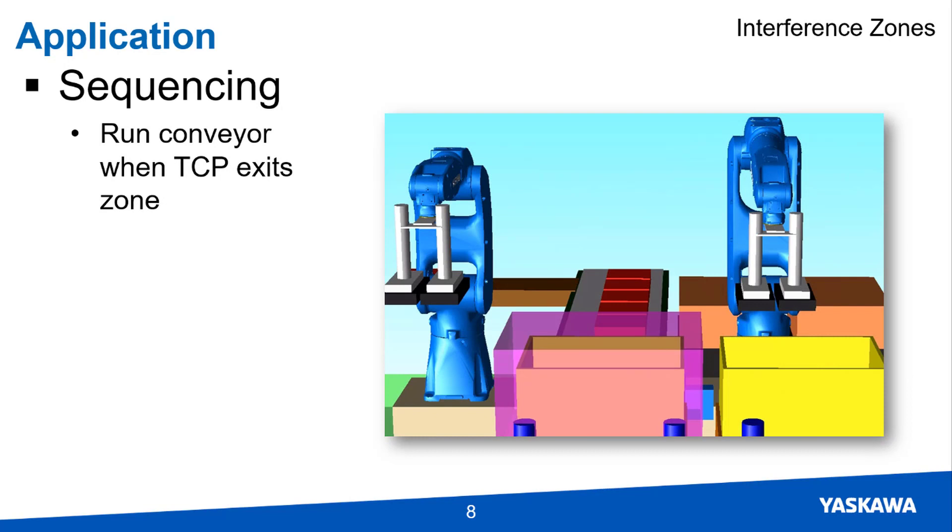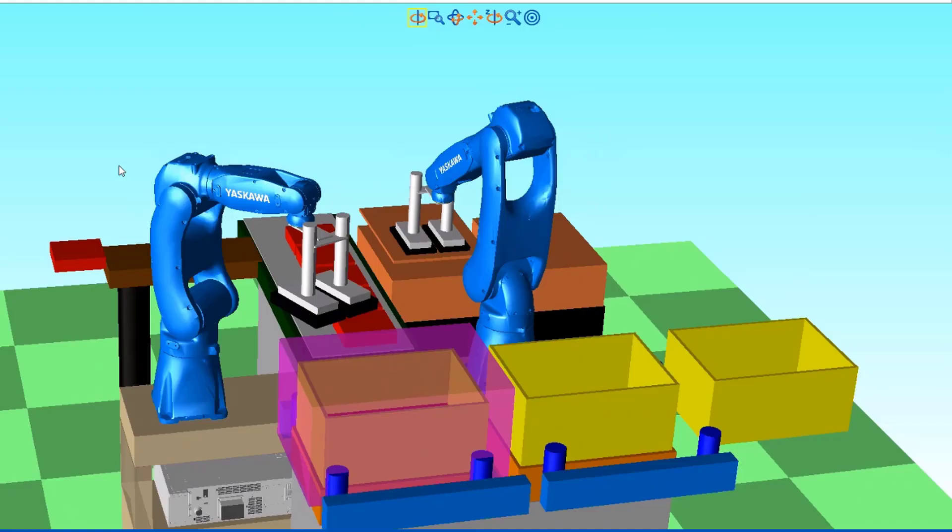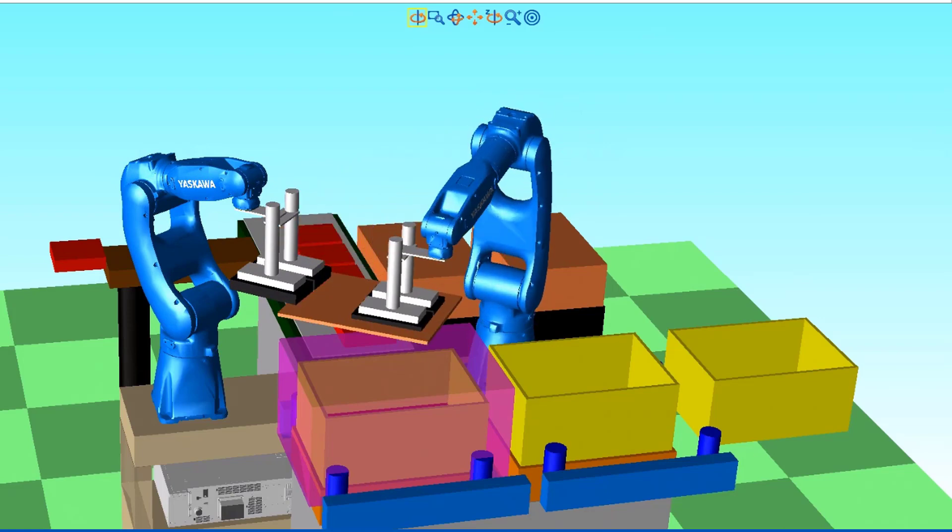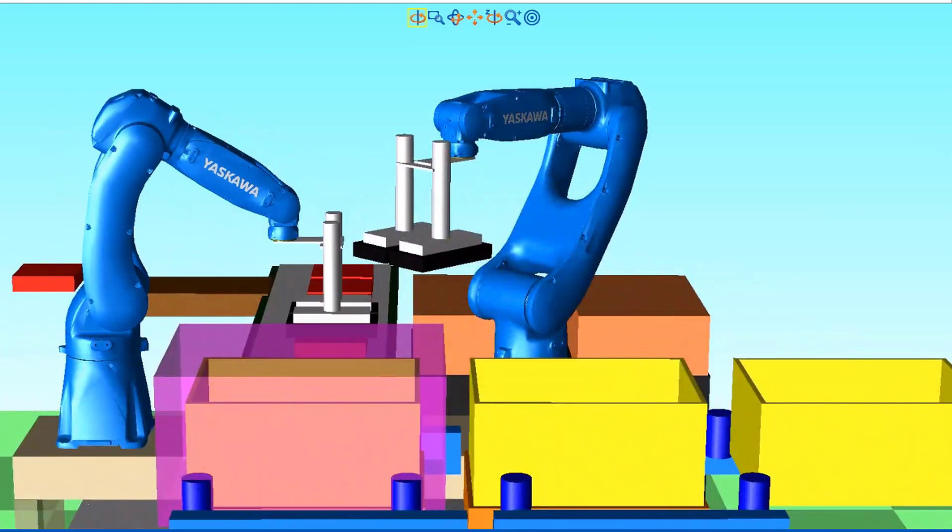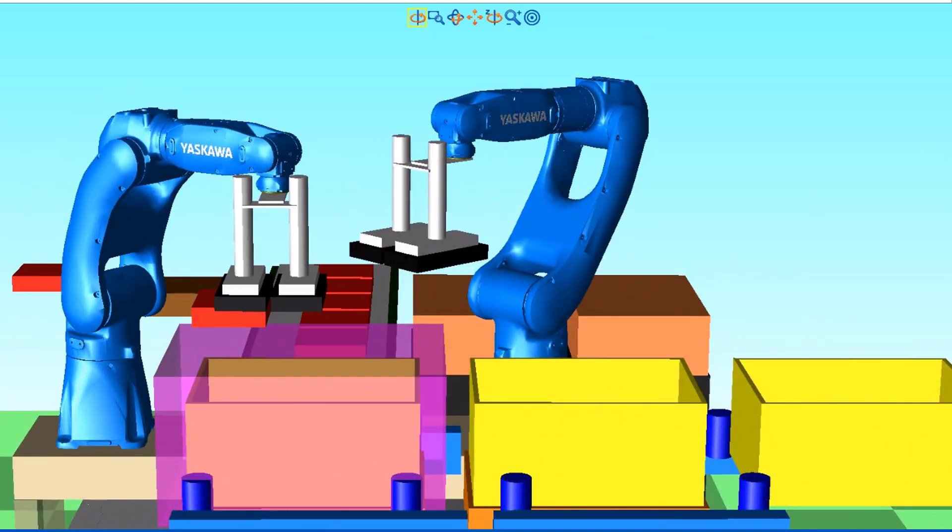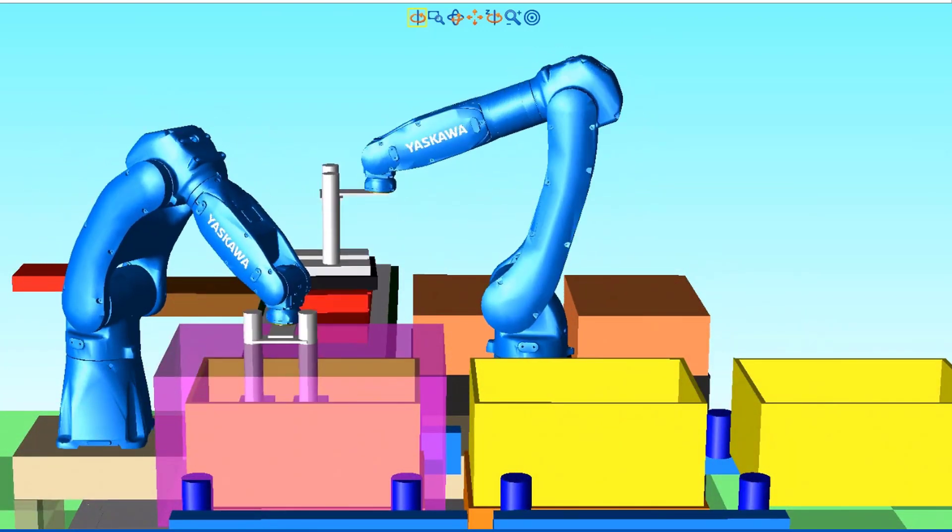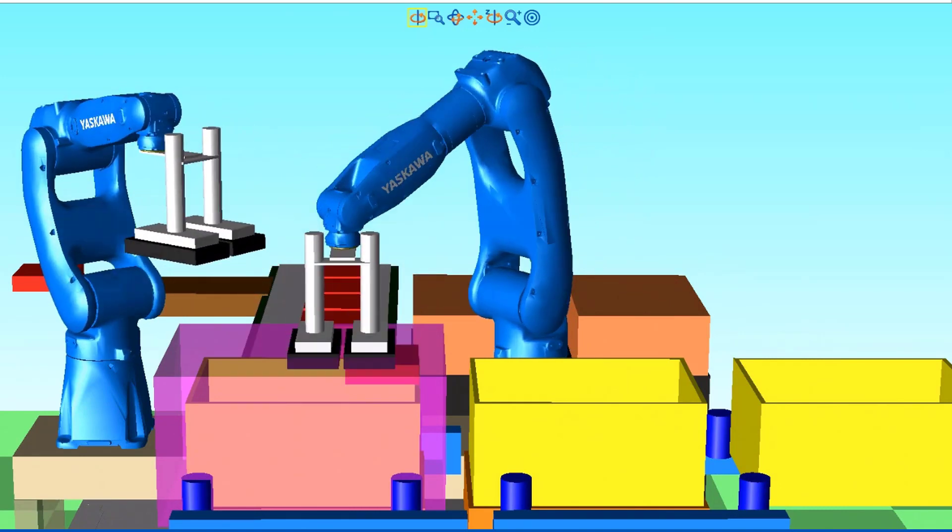Another example is to start or stop a conveyor using interference zones. In this case, the interference zone is over the box on the conveyor. The IEC program signals the conveyor not to move the box while the TCP is violating the interference zone.